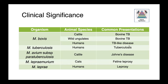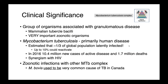Mycobacterium bovis is the cause of bovine tuberculosis in both cattle and wild ungulates, and in people it causes a TB-like disease. Tuberculosis, of course, is caused by mycobacterium tuberculosis. Mycobacterium avium subspecies paratuberculosis, or MAP for short, is a cause of Johne's disease in cattle and other ruminants. Mycobacterium lepromarium causes feline leprosy, while mycobacterium leprae causes leprosy in people. Our mycobacterium tuberculosis complex organisms are associated with granulomatous disease, and we can also refer to them as mammalian tubercle bacilli for the pathological lesions they produce. These are very important zoonotic organisms.